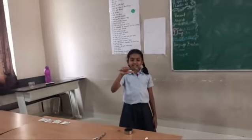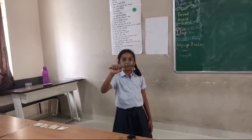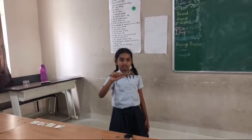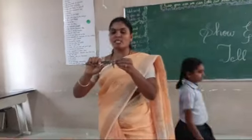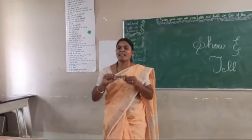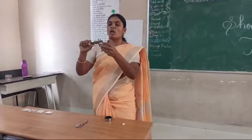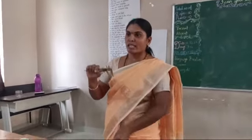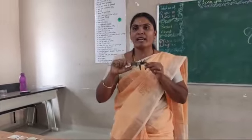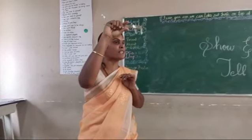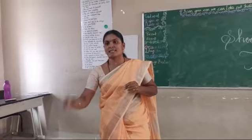This is a vernier caliper. By adjusting it, we can calculate the diameter of a circular object. By adjusting the screw and placing the object in between and closing it, you will get the exact measurement. This is used to calculate the length of extremely circular objects.